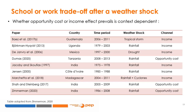When the income channel prevails, authors found that a positive shock has a positive effect on schooling and a negative effect on child work, or that a negative shock has a negative effect on schooling and a positive effect on child work. For instance, Marchetta and co-authors, 2018, found that in Madagascar, the income effect prevails, meaning negative rainfall deviations reduce the probability of attending school and increase the probability of entering the labor market. Conversely, when opportunity cost prevails, positive shocks lead to worse schooling outcomes and more child work. This is the case in Zimmerman, 2020, who finds that in India, negative rainfall shocks increase school enrollment and attainment and decrease the probability of working for children younger than 15.